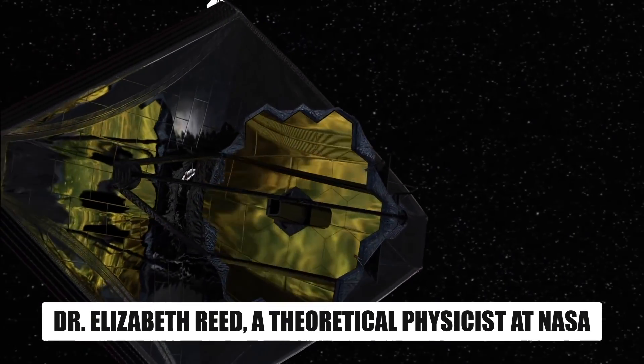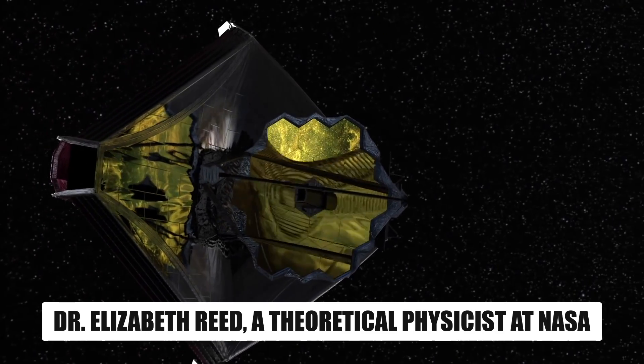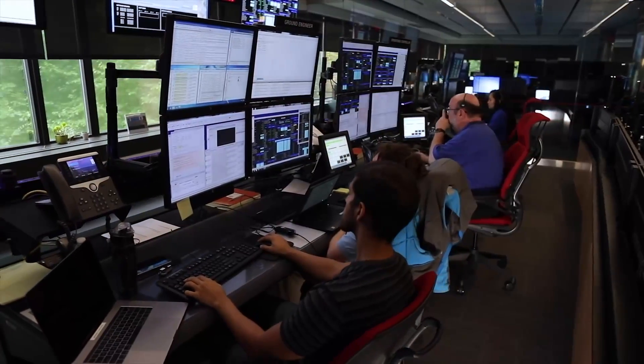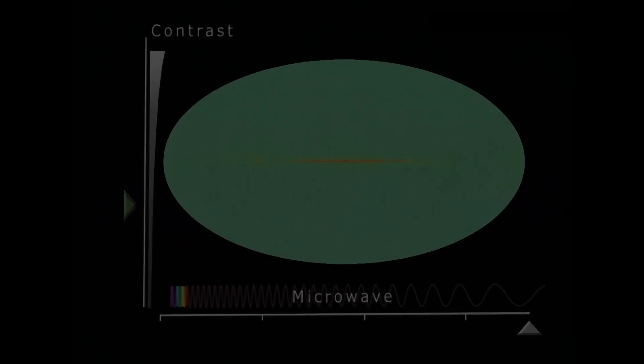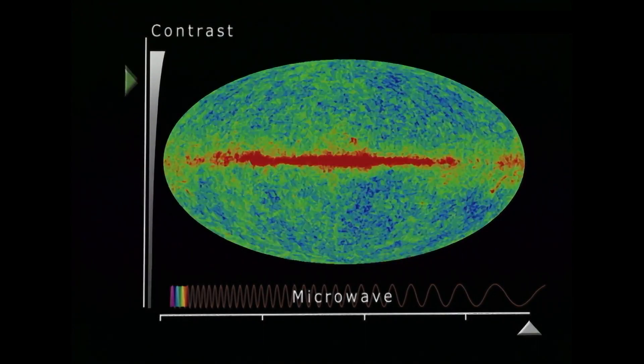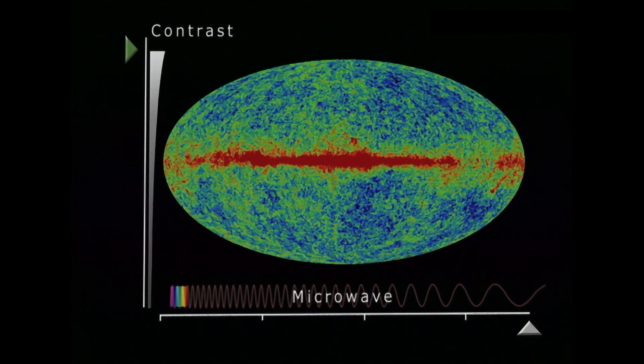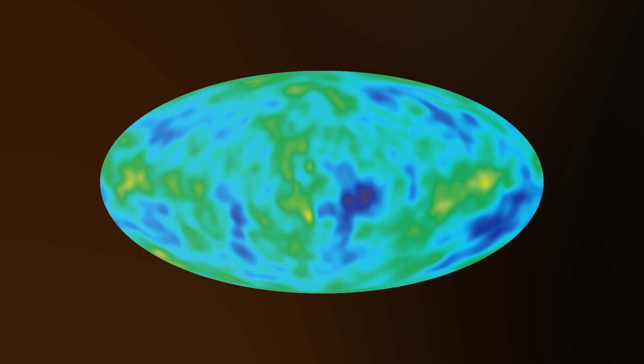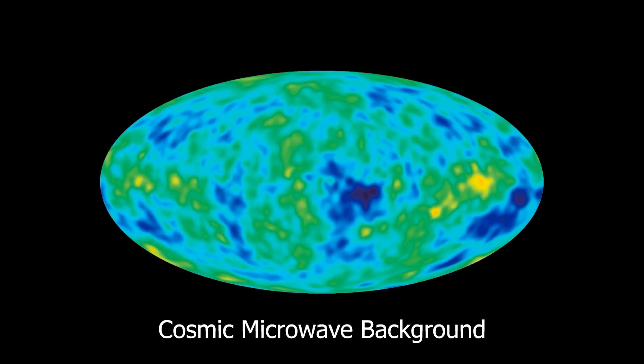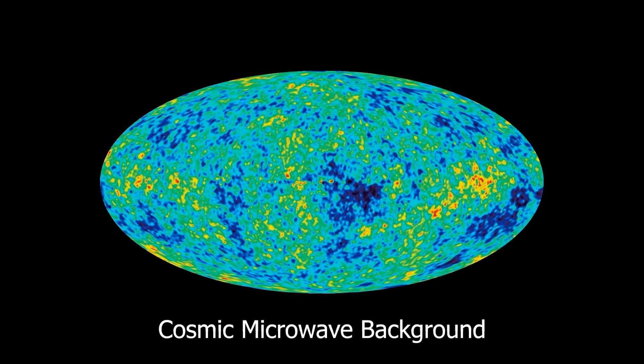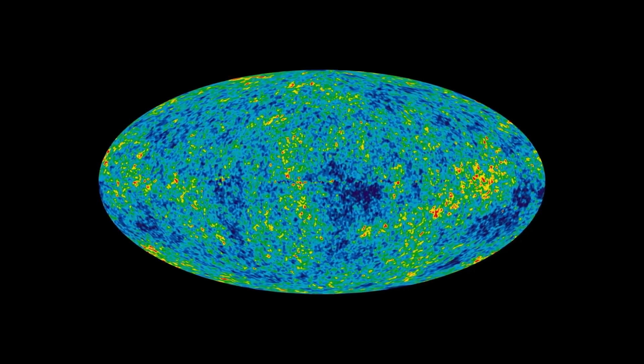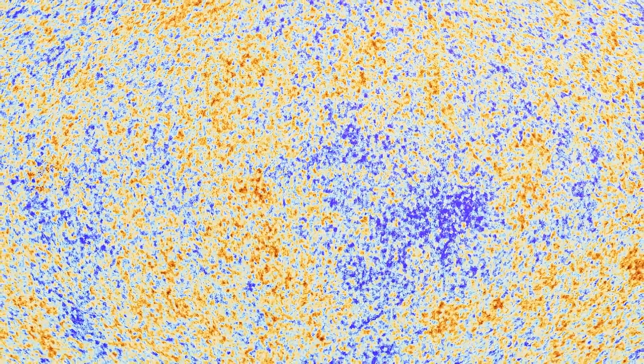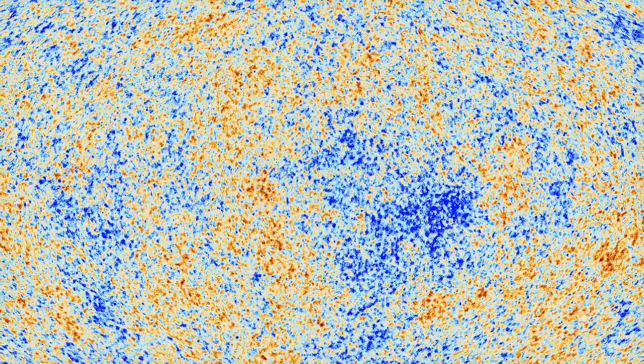Dr. Elizabeth Reed, a theoretical physicist at NASA, was among the first scientists to receive the initial data transmitted by the JWST. As she meticulously analyzed the information, one particular image caught her attention. The cosmic microwave background, CMB, the faint afterglow of the Big Bang, displayed something unusual: a cluster of unexplained circles of light, which Reed immediately recognized as potential B-modes.